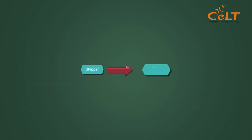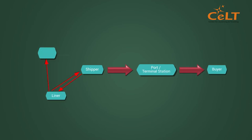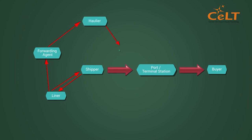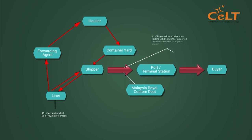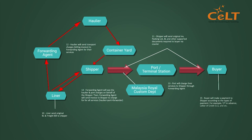Finance documentation: 1. Freight bill — Liner to Shipper. 2. Transport charges — Haulier to Forwarder on behalf of Shipper. 3. Port charges — Port to Forwarders. 4. Forwarding invoice — Forwarders to Shipper. 5. Commercial invoice — Shipper to Buyer.